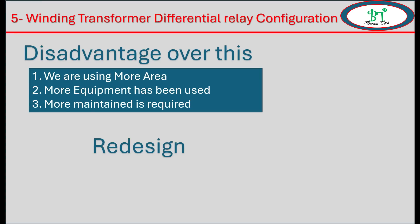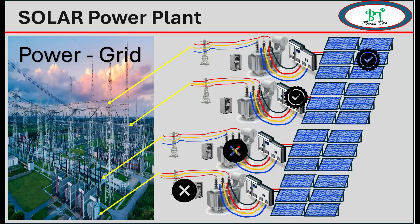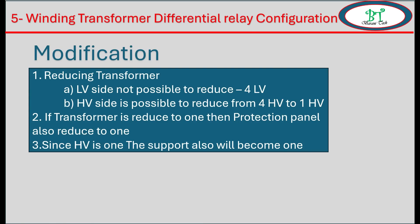Now we will try to redesign the system. Reducing the solar panel is not possible since we need the power it generates. Making one power module a bigger size would be very costly, but we can integrate multiple power modules into one single structure. For the power transformer, we can reduce four two-winding transformers into one transformer with one HV side and four windings on the LV side.